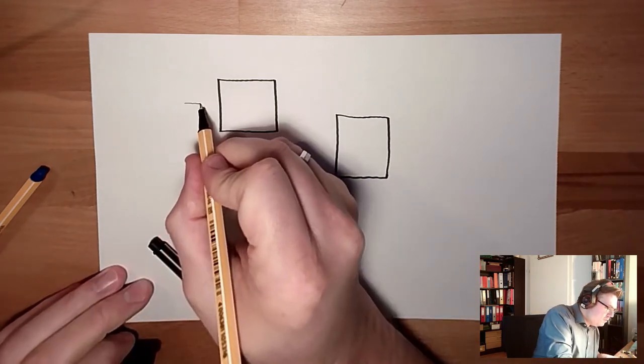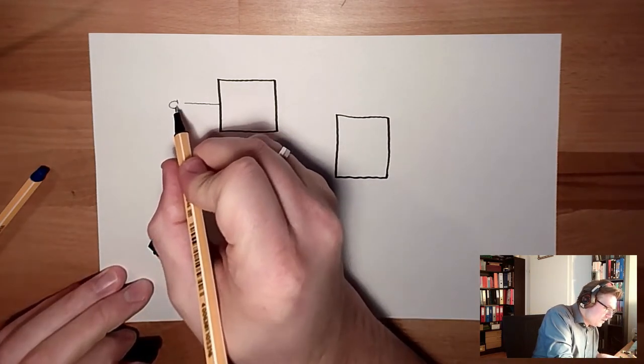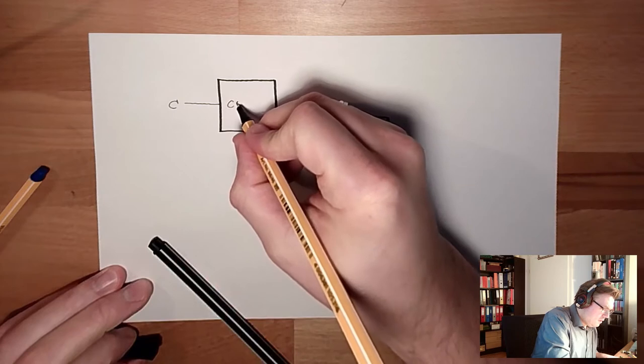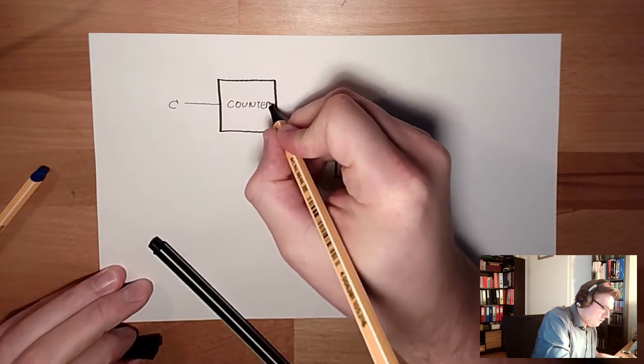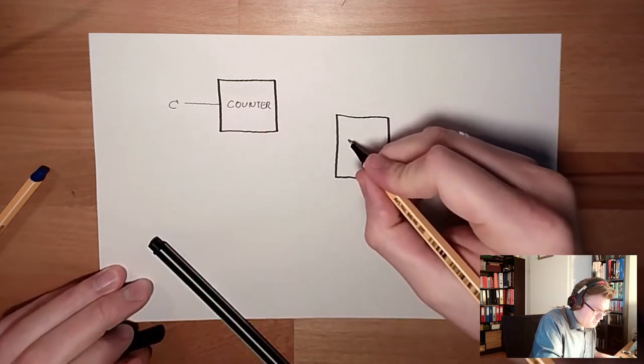So here is the C input which shall be counted. This here is the counter and this is the comparator.